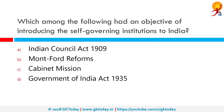Which among the following had an objective of introducing self-governing institutions to India? The correct answer is Montfort reforms. The Montagu-Chelmsford reforms were introduced by the British colonial government to introduce self-governing institutions gradually to India. The reforms were outlined in the Montagu-Chelmsford report in 1918 and formed the basis of the Government of India Act 1919.